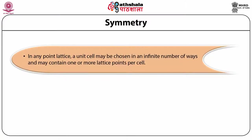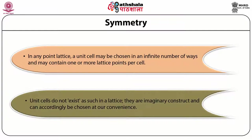In any point lattice, a unit cell may be chosen in an infinite number of ways and may contain one or more lattice points per cell. In the primitive unit cell, there are 8 corner points each contributing 1/8, giving 8 × (1/8) = 1 total lattice point. For body-centered, 1 + 1 = 2. For face-centered, 1 + (1/2 × 6) = 4. For base-centered, 1 + (1/2 × 2) = 2.